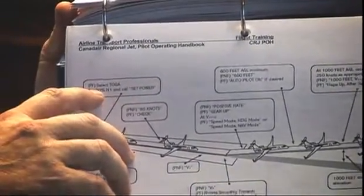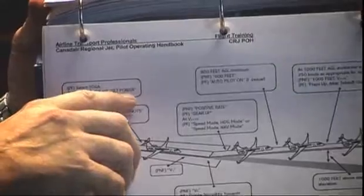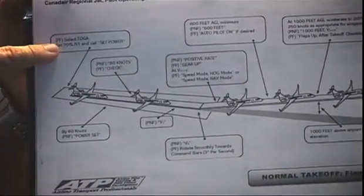I want to use this as an example of how to use these profiles. This one starts out on the left side of the profile, and the very first part right here says the pilot flying selects TOGA — which is the takeoff or go-around button that sits on the side of the thrust lever — set 70% in one, and then call 'set power.' Anything that's in quotation marks is known as a call out, and I need you to memorize all those for every profile in here. PF means the pilot flying — that will be you while you're flying. And the PNF is the pilot not flying, which will also be you when you're not flying, or when you're sitting in the left seat.